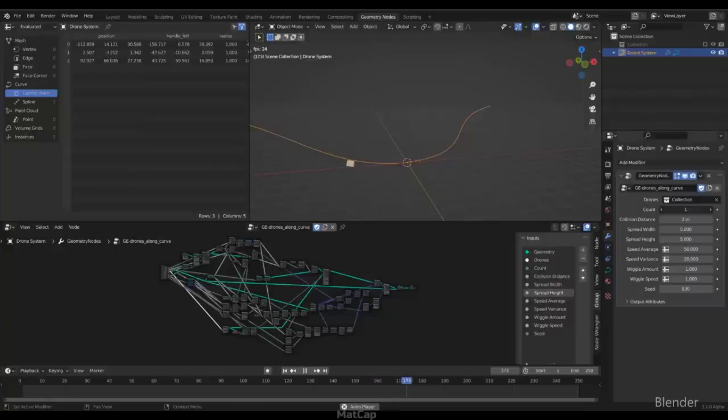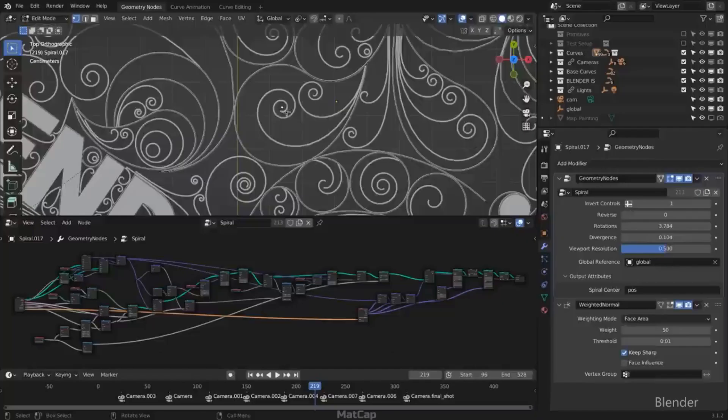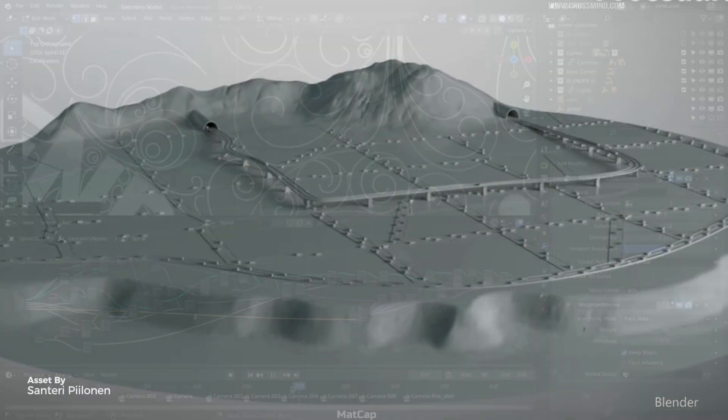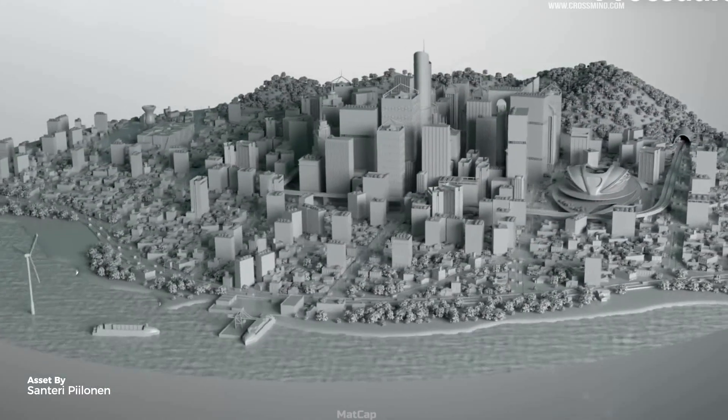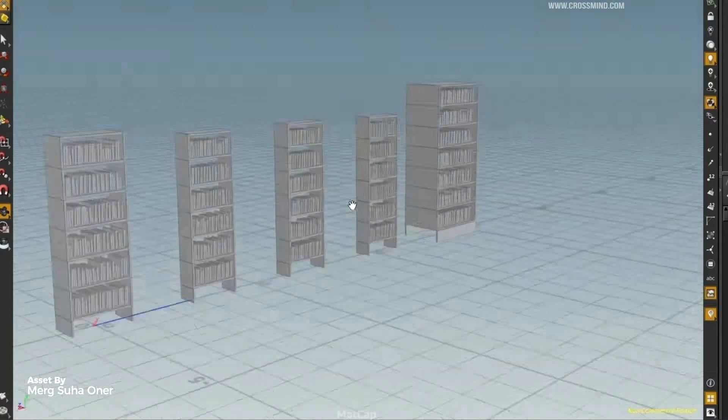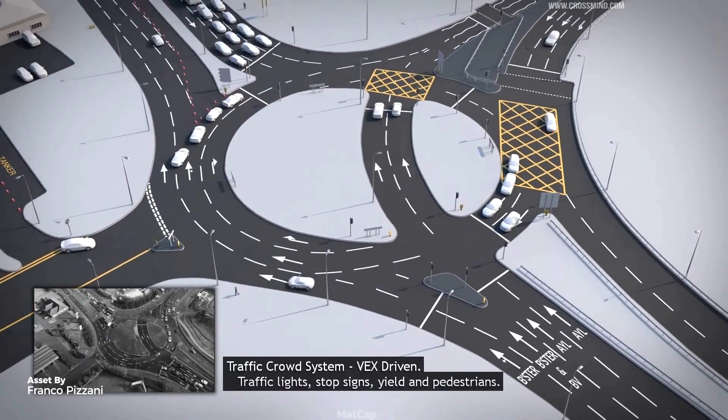Geometry Nodes system is used for procedural generation or modification of object geometry using node-based operations, also known as graphical programming. Essentially, with the help of geometry nodes, you can create anything: various animations, object modeling, generating entire environments and much more.